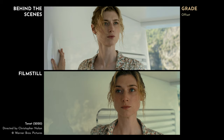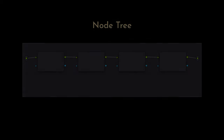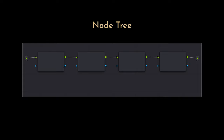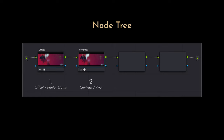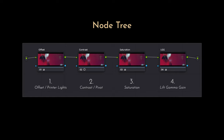Let's take a look at my node tree. My rule is to keep it simple, minimal and clean. I want to use the minimum amount of controls to get to the final look, so mainly I'm using only four nodes. The first node is offset printer lights to change the RGB values and adjust the exposure. The second node is for contrast and pivot adjustments, the third node is to adjust the saturation, and the fourth node is for lift, gamma and gain to match shadows, midtones and highlights.